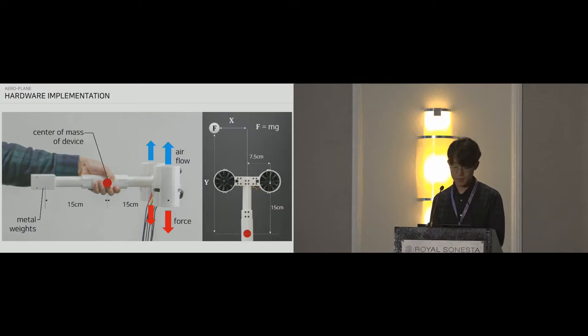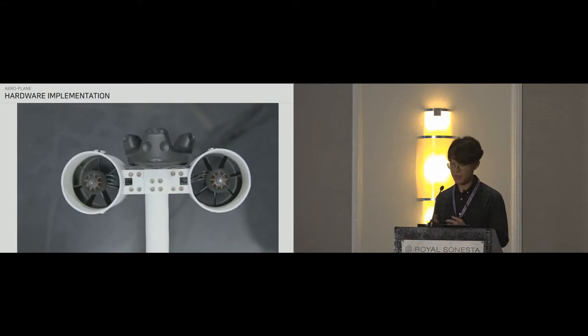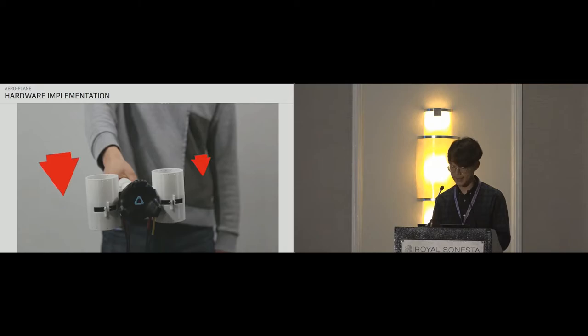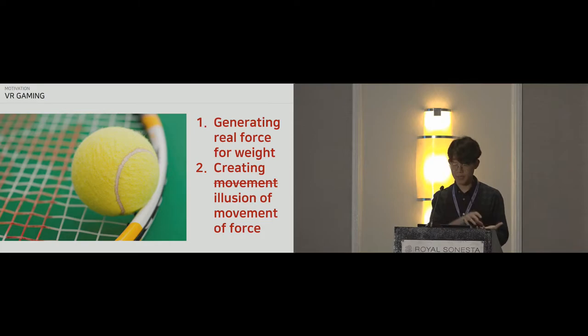And here is our prototype. So metal weights were added to the back to counterbalance the weight of the propellers in the front when they were not in use to neutralize. And each propeller had a thrust of around 7 newtons to make a 4 newtons of total force. And by varying the thrust of each propeller, we could create varying torques around the X and Y, or the pitch and roll axes. Through our approach, we were able to achieve both goals of weight generation and object movement, specifically by using the illusion of movement without using additional moving parts.